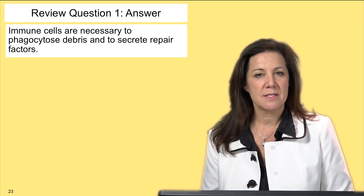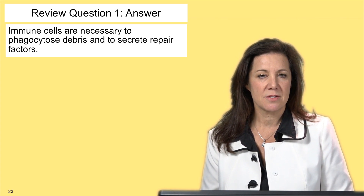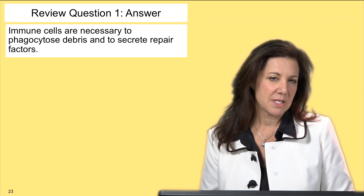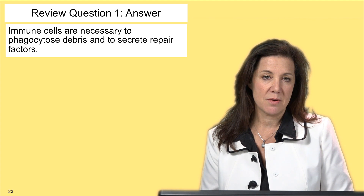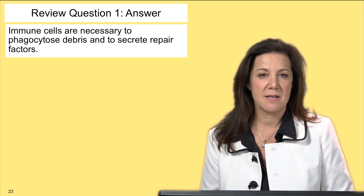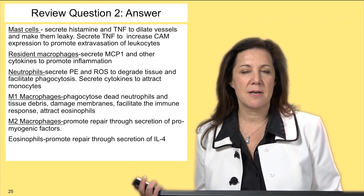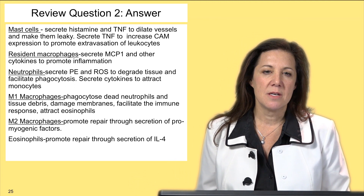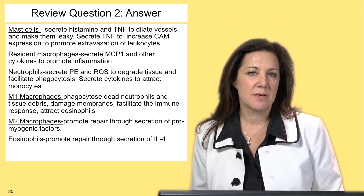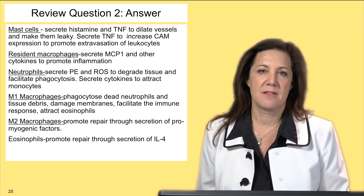Immune cells are necessary first to phagocytose debris and also to secrete repair factors. They are also necessary to recruit other immune cells to participate in the process. Here is a list of all the different players in the process so you can review these different players and refresh your memory on how they all participate in the various steps.